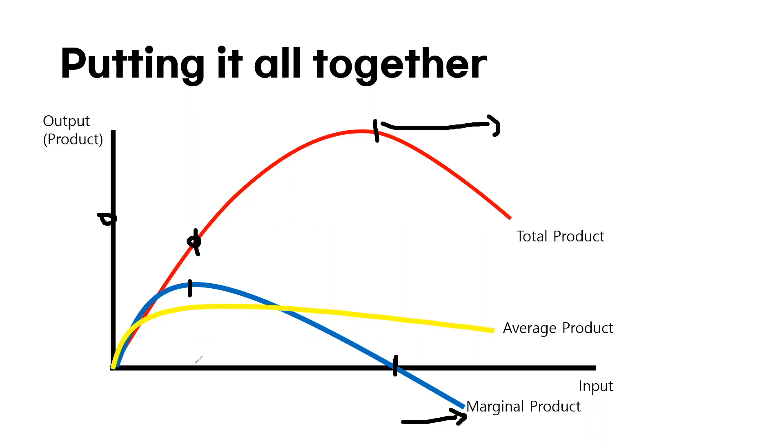It's basically similar to the average product. As long as the marginal product is increasing, the average product will increase, but if it decreases, the average product will have to decrease. It's basically simple since average product is nothing more than total product divided by quantity of input.